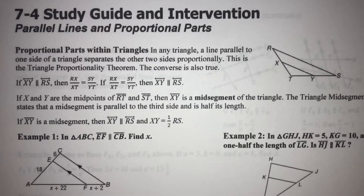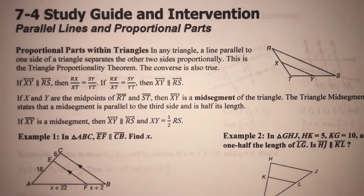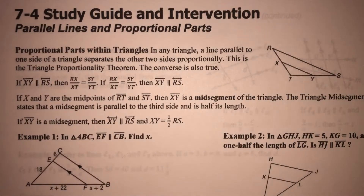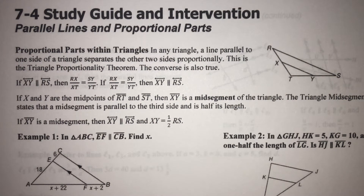This lesson is chapter 7, lesson 4: Parallel Lines and Proportional Parts. Previously in chapter 7 we've been talking about ratios and proportions. We started looking at triangles in the last lesson, and we talked about similar triangles.